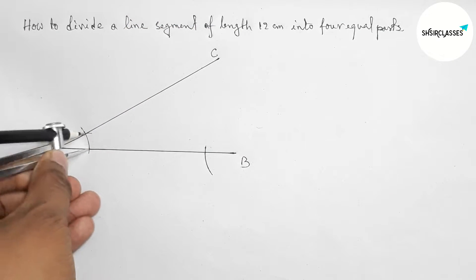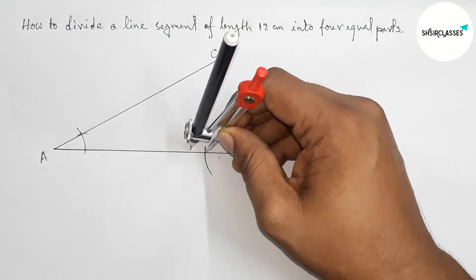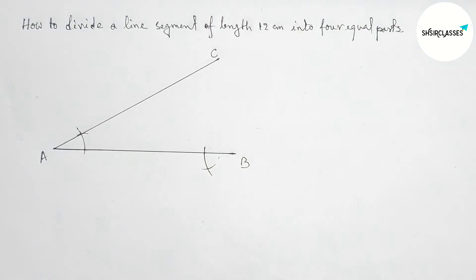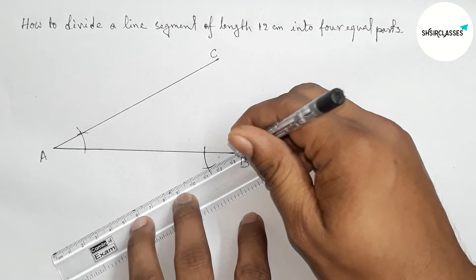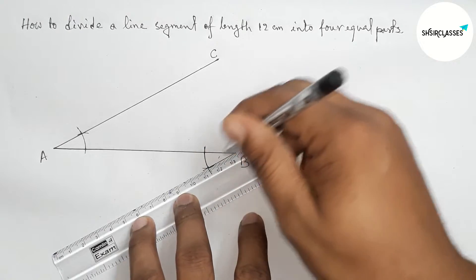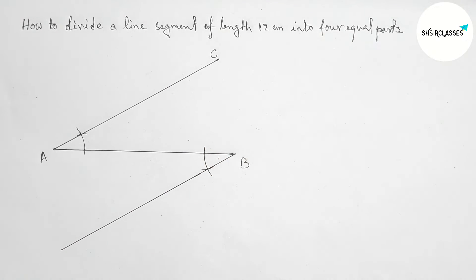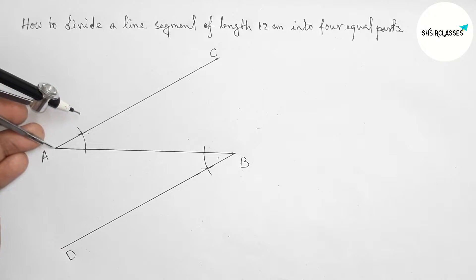Now putting the compass here and with same length and cut here. Next joining this line which is parallel with the line AC. So joining this and now taking point here D.